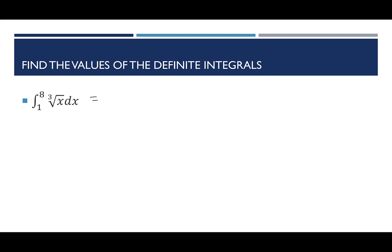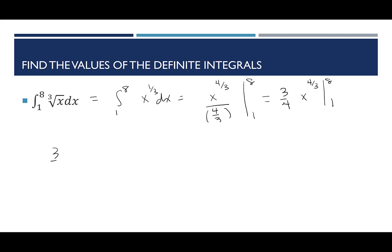Next: the integral from 1 to 8 of the cube root of x dx. I rewrite as x to the 1/3 power. Adding 1 gives 4/3, and I divide by 4/3, which I flip to 3/4. So I have (3/4)x^(4/3) evaluated from 1 to 8. Plugging in: (3/4)(8^(4/3)) minus (3/4)(1^(4/3)). The cube root of 8 is 2, and 2 to the 4th is 16. If you're using a handheld calculator, put parentheses around the exponent 4/3 so it performs the cube root first.